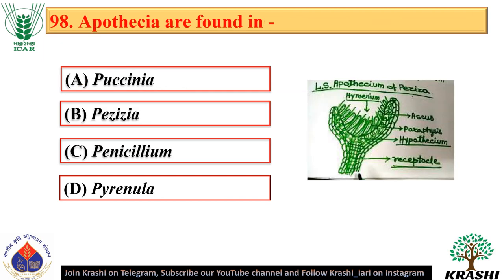Question number 98. Apothecia are found in Ascomycetes. Apothecia are spore-bearing structures consisting of a cup-shaped body bearing asci on the exposed surface.